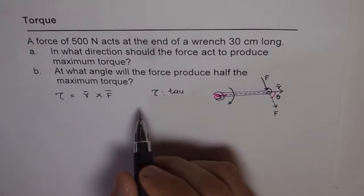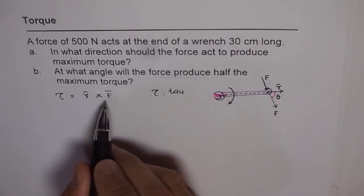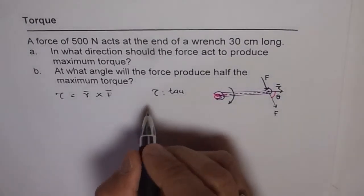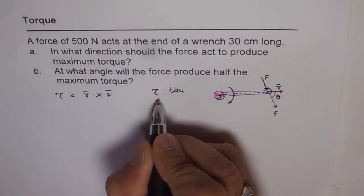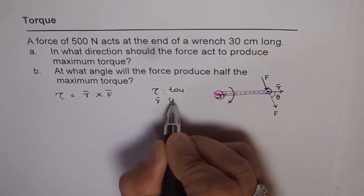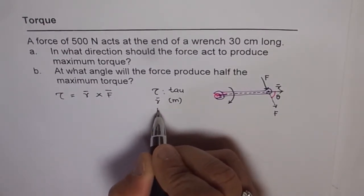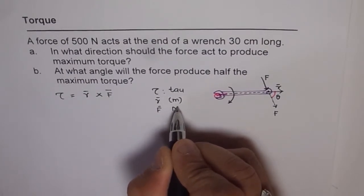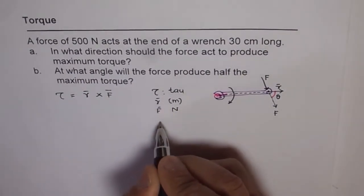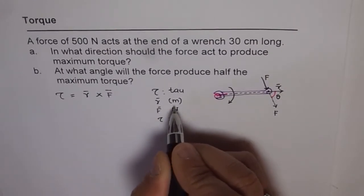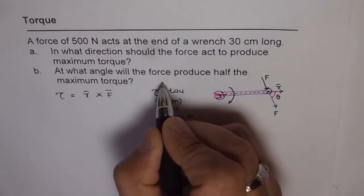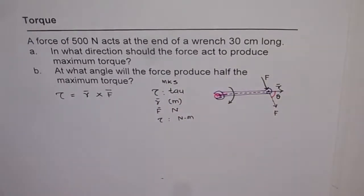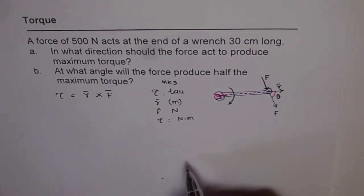A point to be noted here is that when we are writing r cross f, units of r, which is radial arm length, is always in meters. The unit for force is in newtons. Therefore, units for torque will be in newton meter. So we follow basically MKS system. All the units should be in this way.